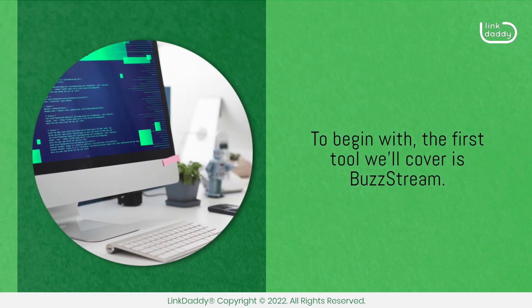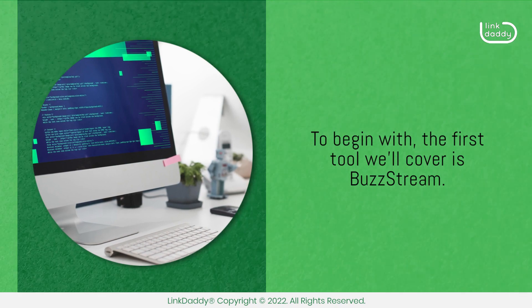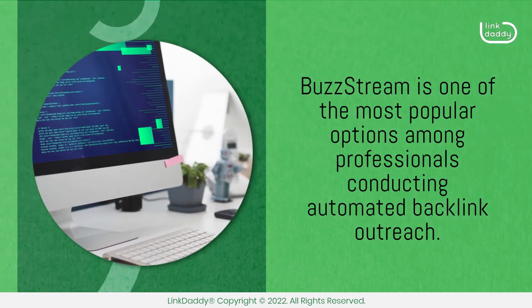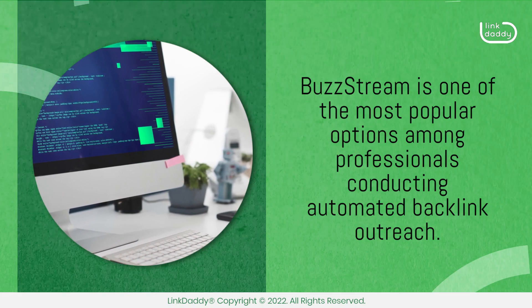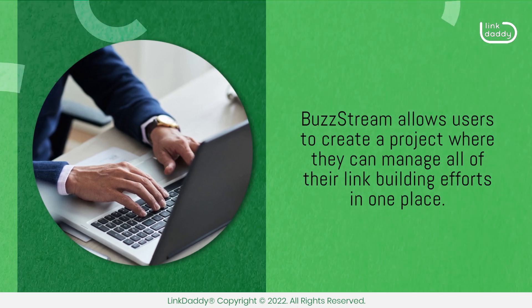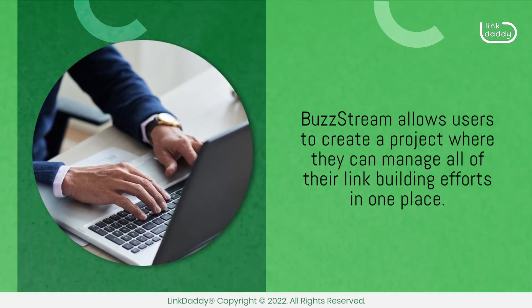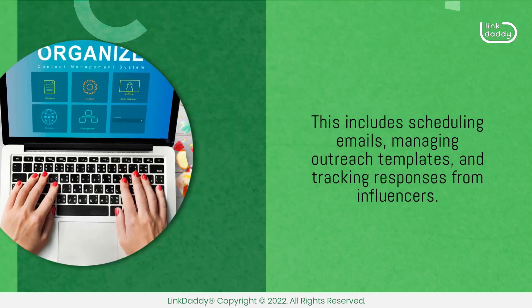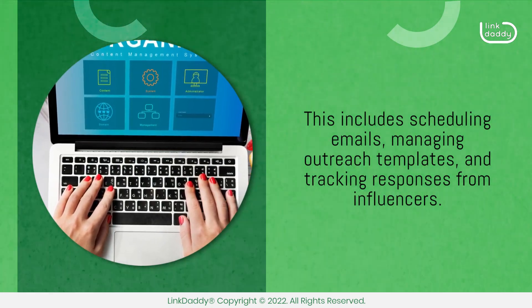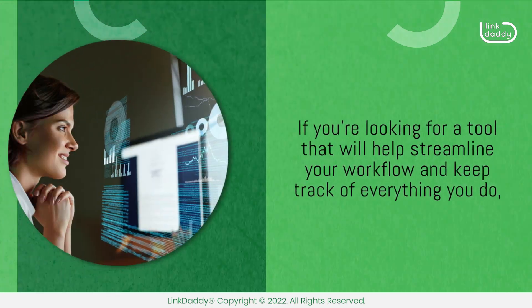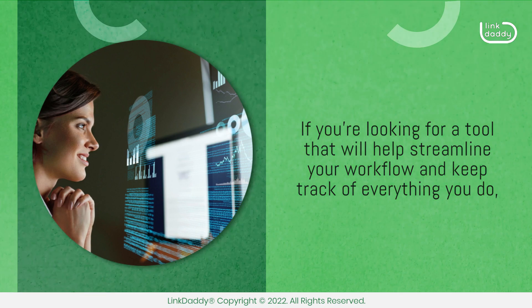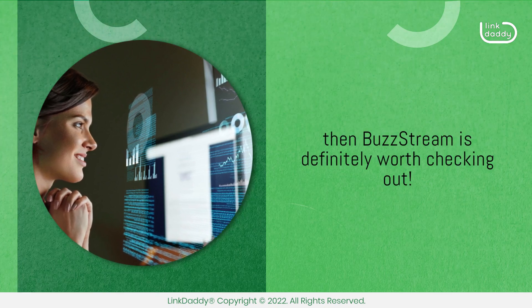The first tool we'll cover is BuzzStream. BuzzStream is one of the most popular options among professionals conducting automated backlink outreach. It allows users to create a project where they can manage all of their link building efforts in one place. This includes scheduling emails, managing outreach templates, and tracking responses from influencers. If you're looking for a tool that will help streamline your workflow and keep track of everything you do, then BuzzStream is definitely worth checking out.